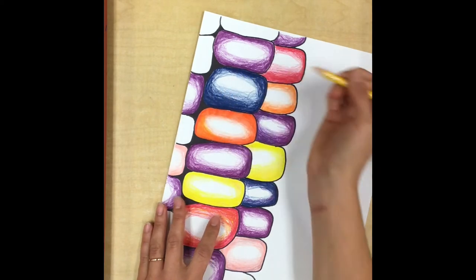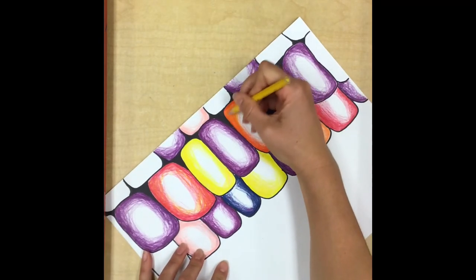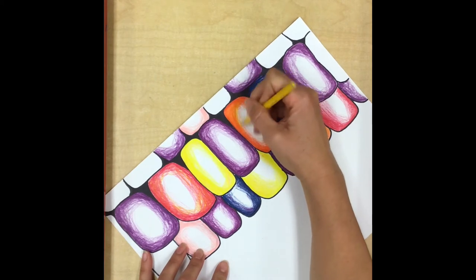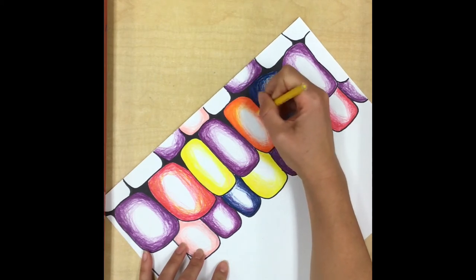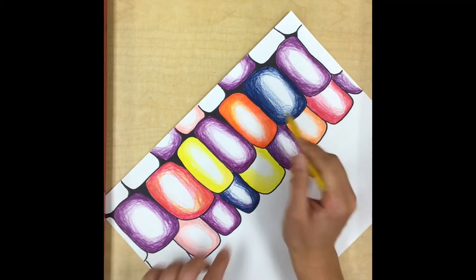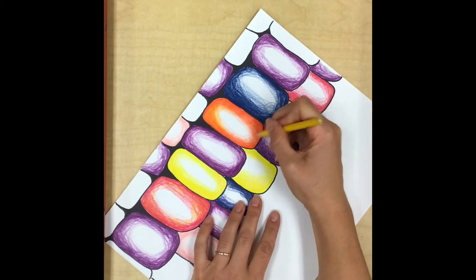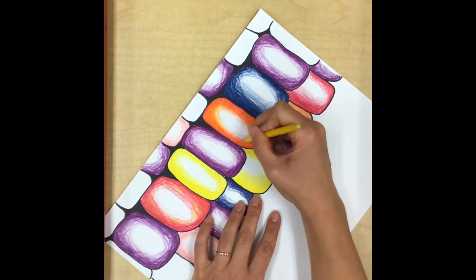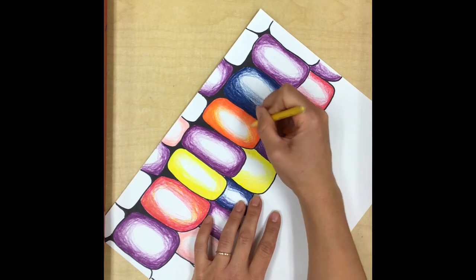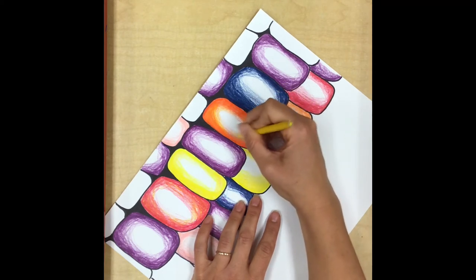So I'm just kind of doing the same thing. I'm coloring hard on the edge and then a little lighter in the middle. And you can either do it on half of the kernel or you can kind of do it on the whole thing, more than half if you would like.